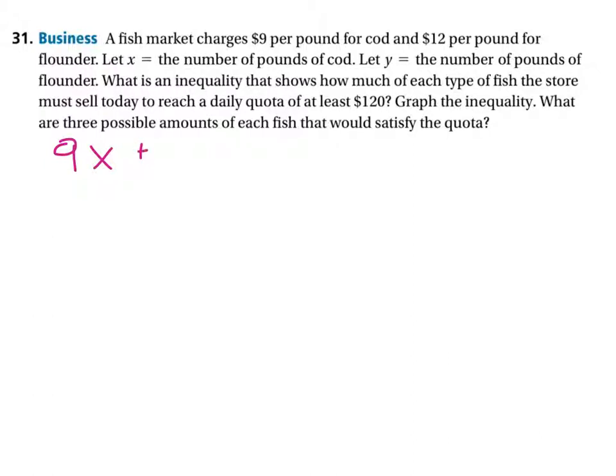Now add to that the number of pounds of flounder sold and multiply, of course, that variable Y by how much do they cost per pound, $12 per pound. So you got 9X plus 12Y, and that'll tell you how much money you're bringing in on the fish.